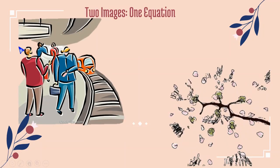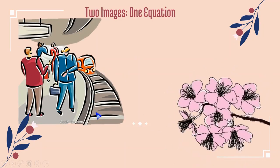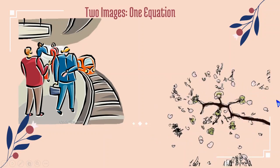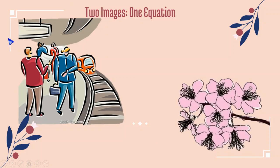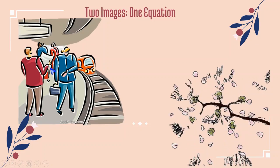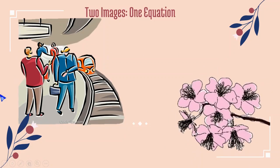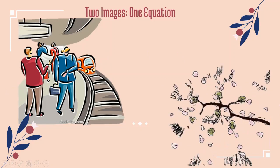We have the image of the dark wet bough and the petals — disappearing in one image, prominent in the other. Ezra Pound, sitting in the station, creates his equation by merging these two images together.